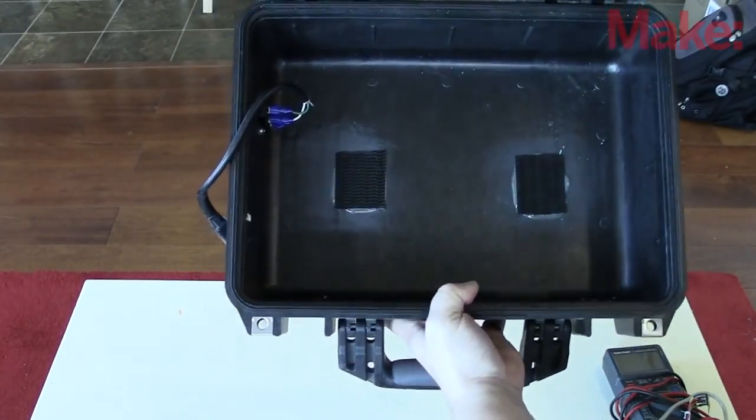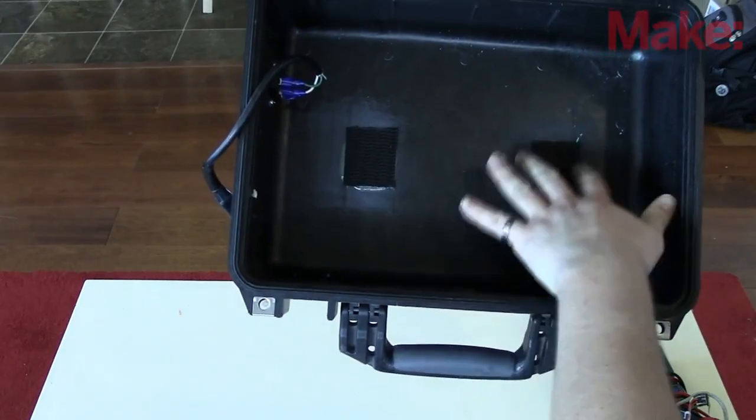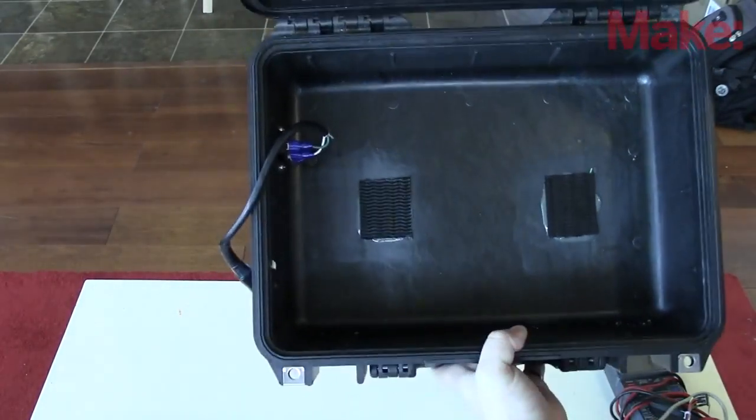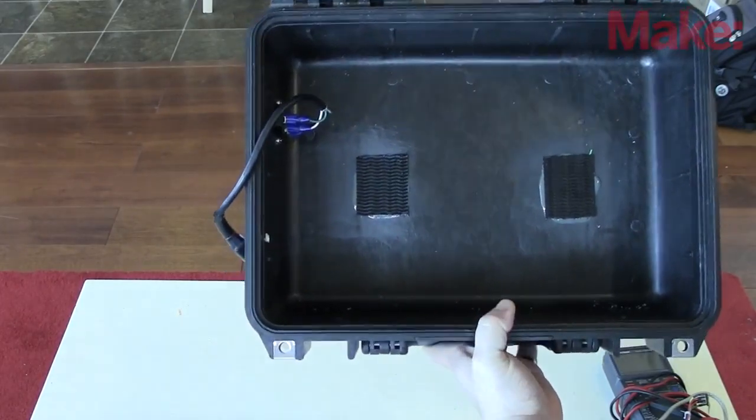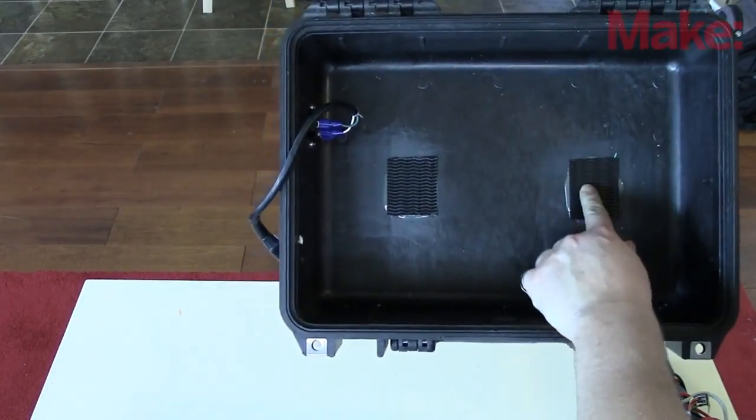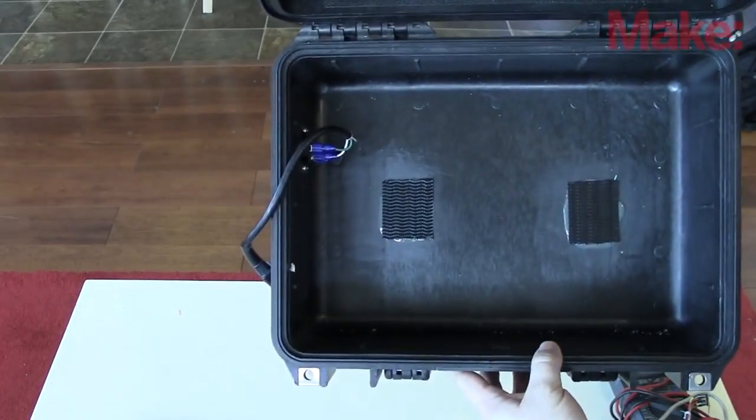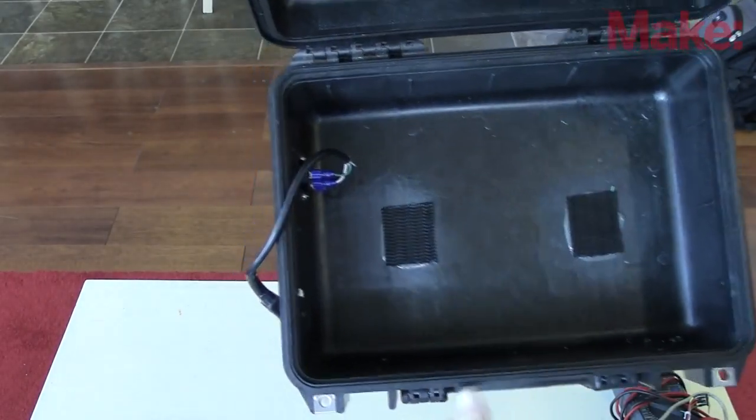As mentioned before the velcro used is the industrial strength type. In fact when I first started this project I had the velcro adhesive giving way before the velcro did, so I had to JB weld the velcro down to the bottom of the cases. This ensured that it actually worked and wouldn't rip off the adhesive.